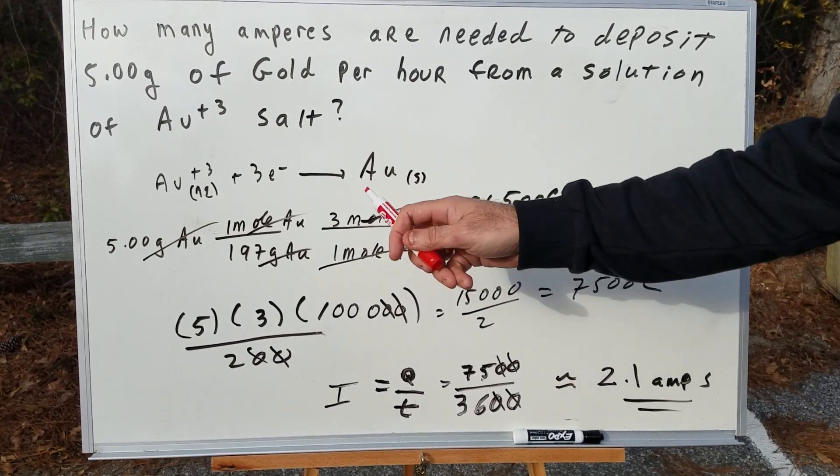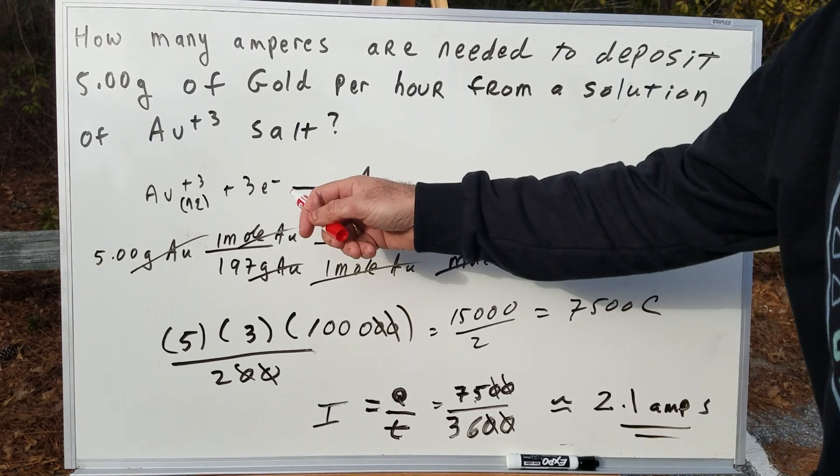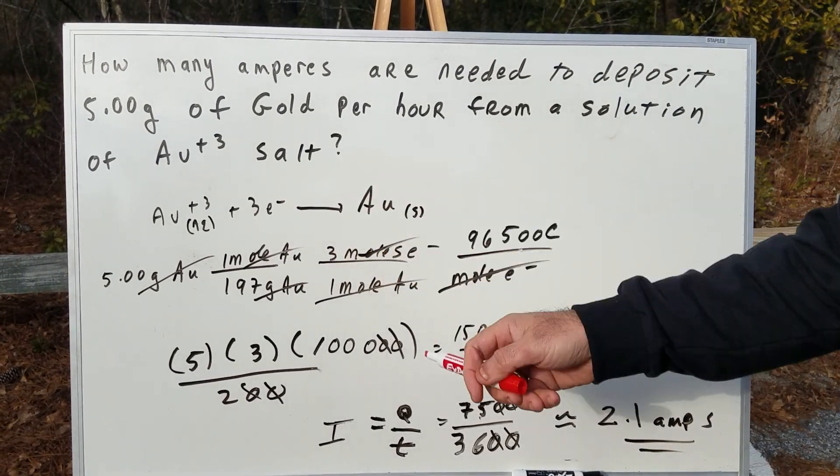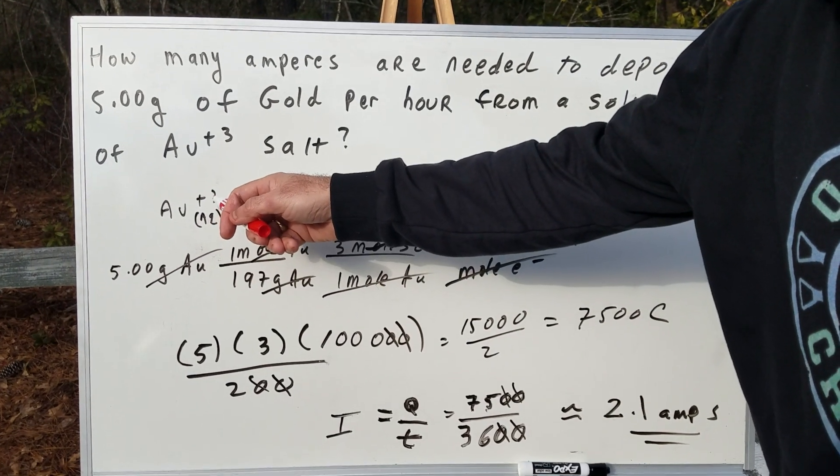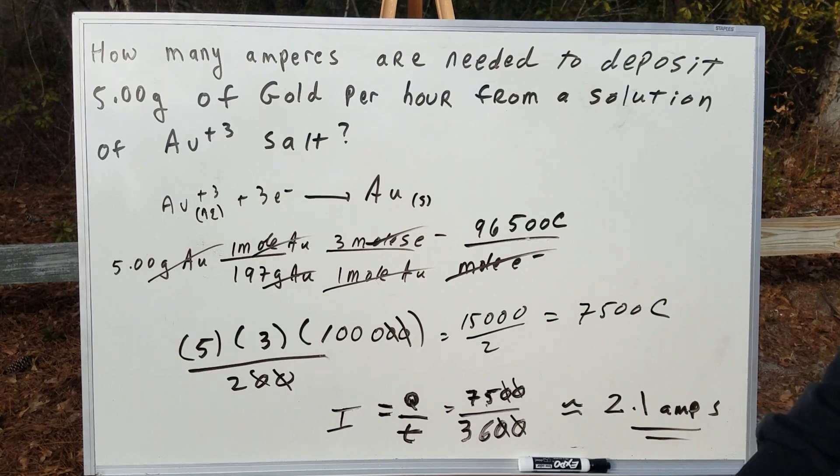The way I would start is I would take the Au³⁺, and since we're making pure gold, which is Au, you need 3 electrons to reduce it down. So as you can see, Au³⁺ requires 3 electrons to reduce it into solid gold.